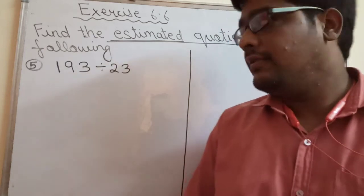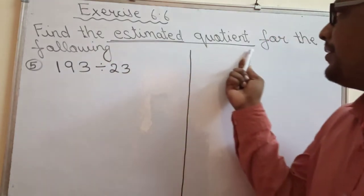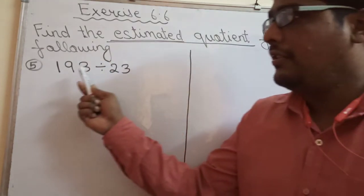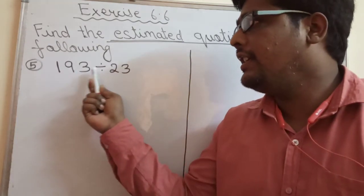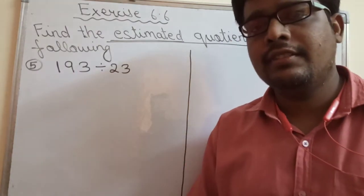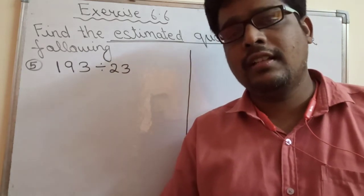Children, now in this video we will find the estimated quotient. Here you can see this is the question: 193 divided by 23. Yahaan par hume estimated quotient nikaalna hai.